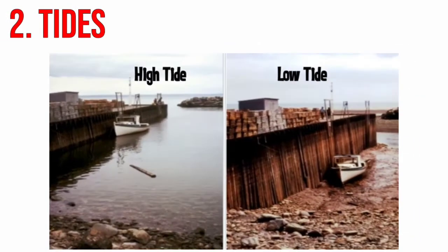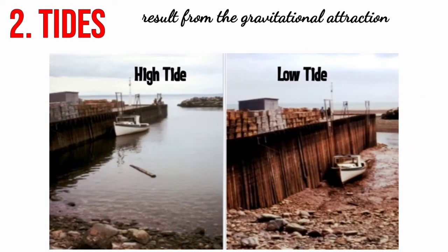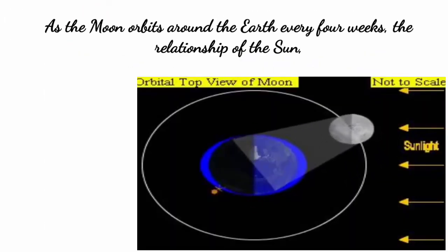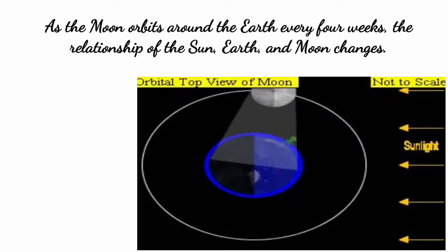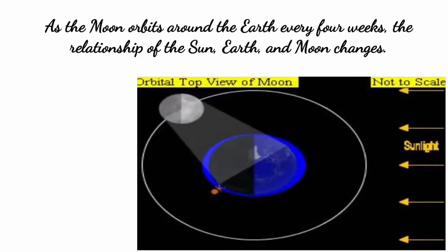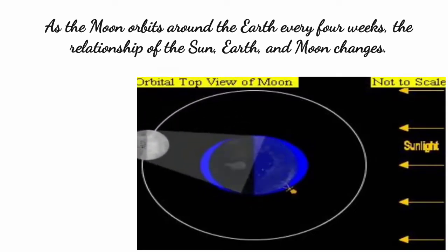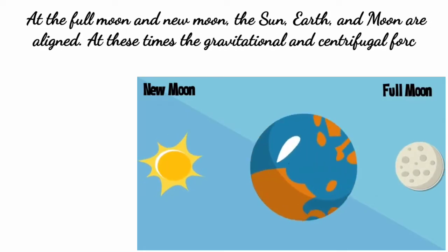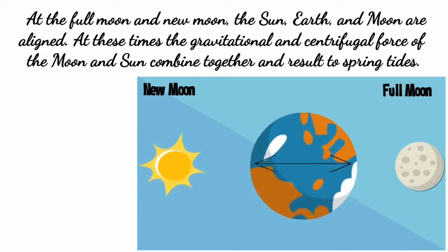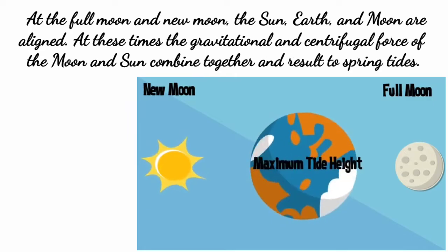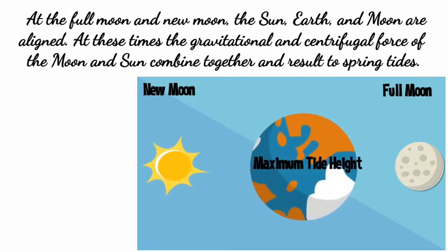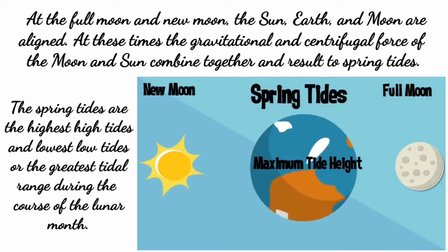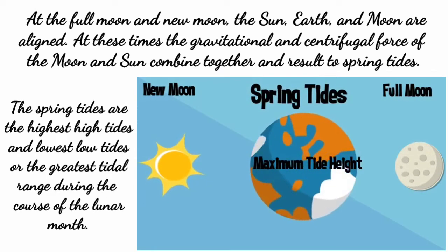Next, we have tides. Tides result from the gravitational attraction of the sun and the moon on the oceans. As the moon orbits around the earth every four weeks, the relationship of the sun, earth, and moon changes. At the full moon and new moon, the sun, earth, and moon are aligned. At these tides, the gravitational and centrifugal force of the moon and sun combine together and result in two spring tides. The spring tides are the highest high tides and lowest low tides, or the greatest tidal range, during the course of the lunar month.